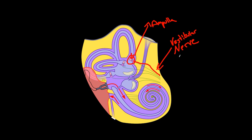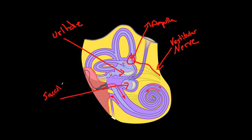One problem with the semicircular canals is that you only get information from them while your head is in motion — you need the endolymph to be moving to set off the hair cells and send a signal. So how do you know your orientation when your head isn't moving? That information comes from two organs: the utricle and the saccule.